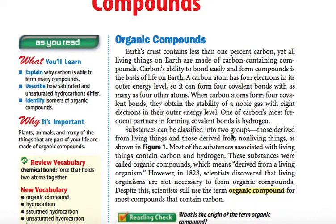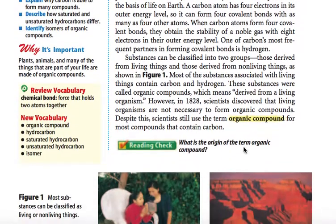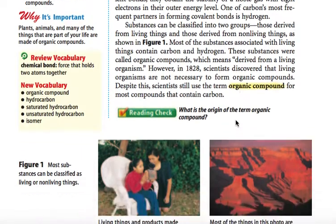Substances can be classified into two groups: those derived from living things and those derived from non-living things. Most of the substances associated with living things contain carbon and hydrogen. These substances were called organic compounds, which means derived from a living organism. However, in 1828, scientists discovered that living organisms are not necessarily needed to form organic compounds. Despite this, scientists still use the term organic compound for most compounds that contain carbon.